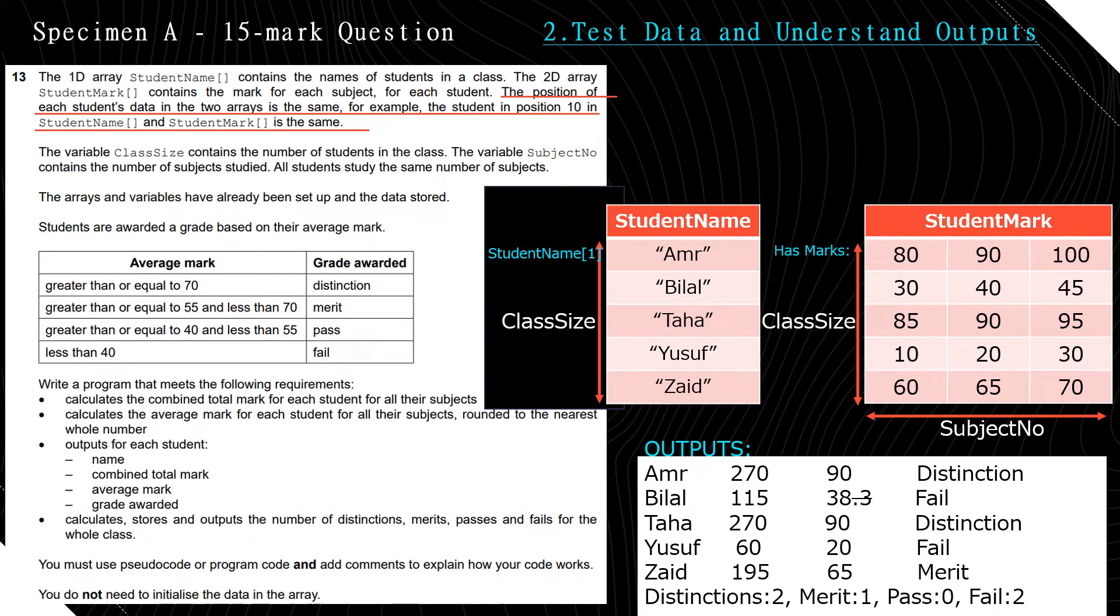Yusuf 60, his average is 20, fail. Zaid, 195, average 65, merit. And finally, after we output all the data for each student, we output the summary for the class. There are two distinctions, one merit, zero passes, and two fail. So we're going to write a program to come up with these outputs.